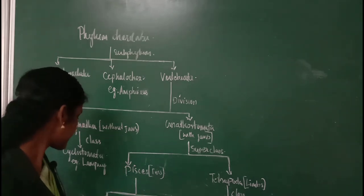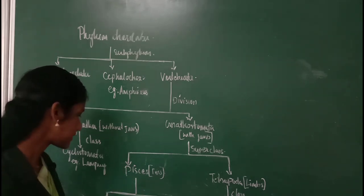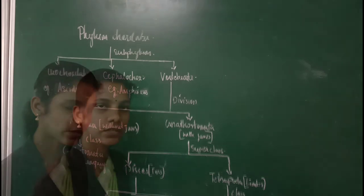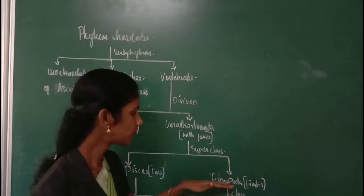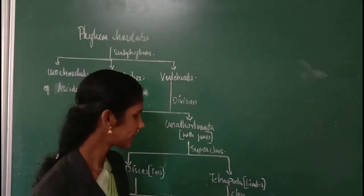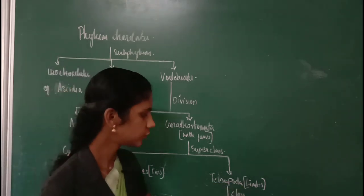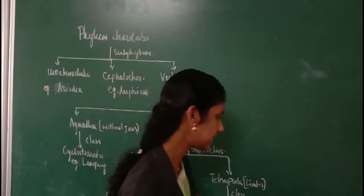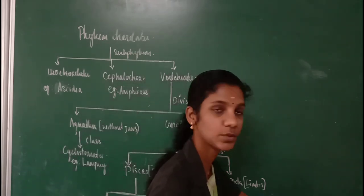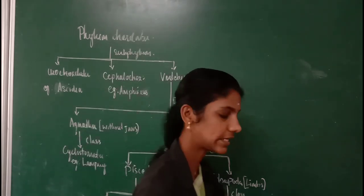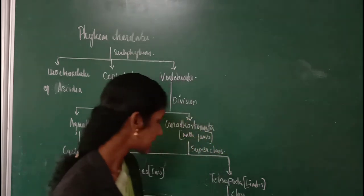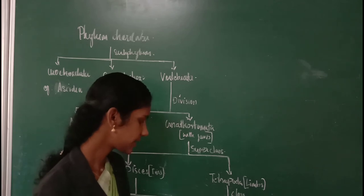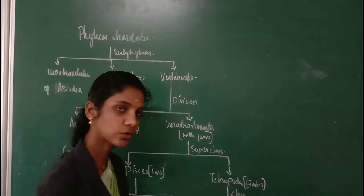Superclass Pisces contains two classes: Class Chondrichthyes and Class Osteichthyes. Similarly, Superclass Tetrapoda can be divided into four classes: Class Amphibia, Class Reptilia, Class Aves, and Class Mammalia.